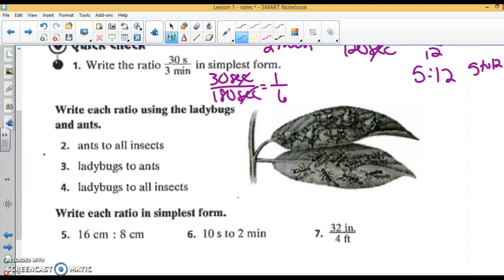Now, it is hard to see in this picture. There are 6 ladybugs on this leaf and there are 8 ants on this leaf. Write each ratio using the ladybugs and the ants. So ants to all insects - well, there are 8 ants and there are a total of 14 insects. That will reduce to 4/7.